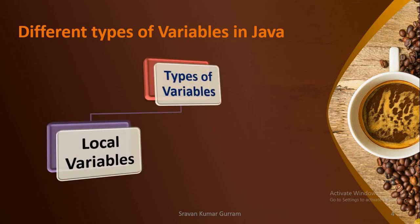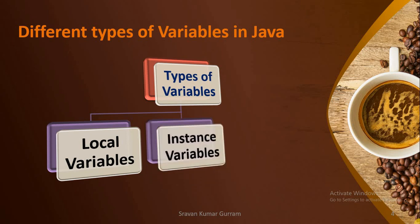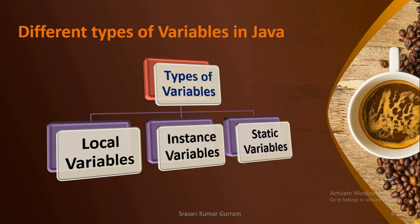We have three types of variables in Java: local variables, instance variables, and static variables.